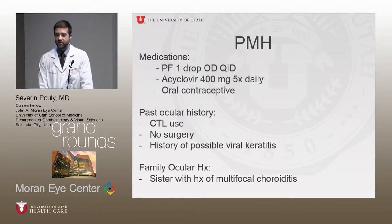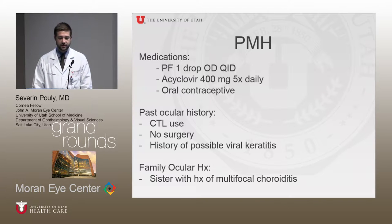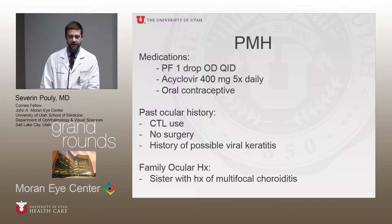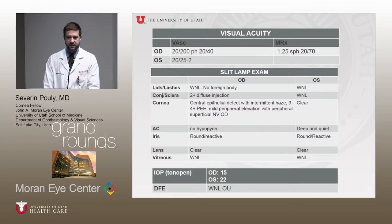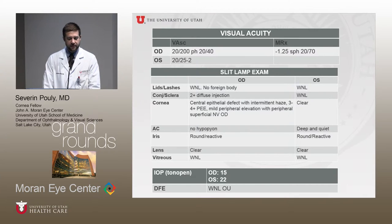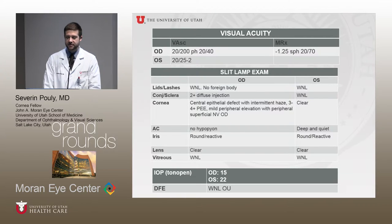On presentation, her vision was 20/200 pinholing to 20/40 uncorrected in the right eye, with a mild myopic refraction correcting to 20/70. Left eye uncorrected was 20/25 and the left eye exam was normal. In the right eye she had diffuse injection, a central epithelial defect in the cornea with scattered areas of haze, and a large number of mundane epithelial erosions.